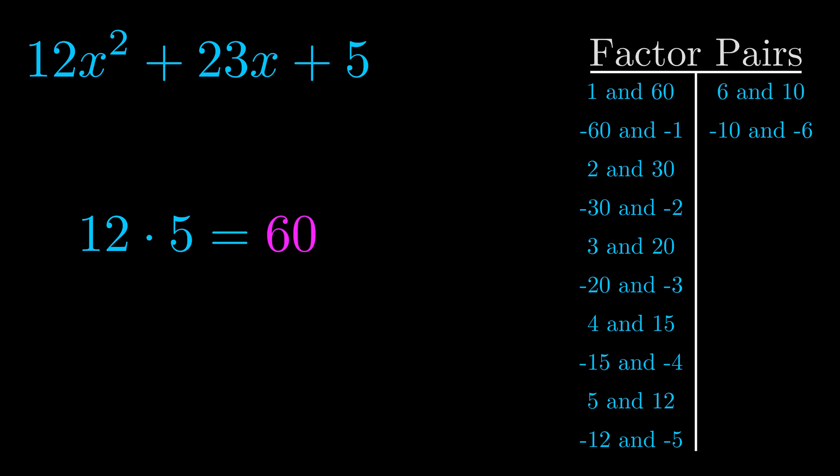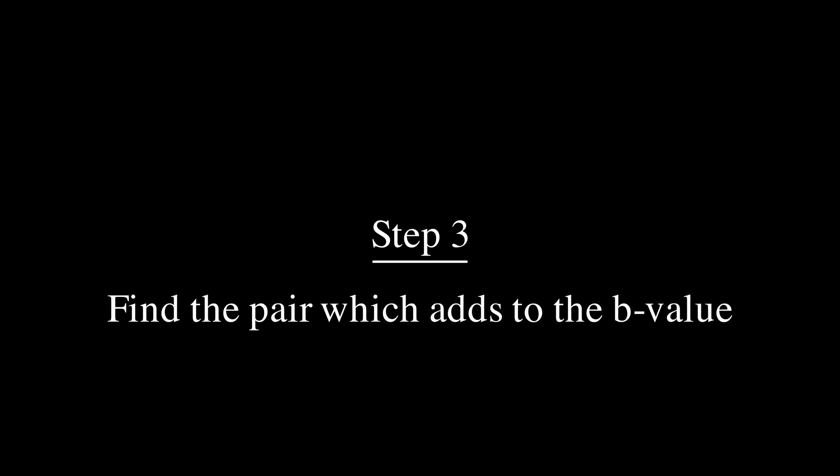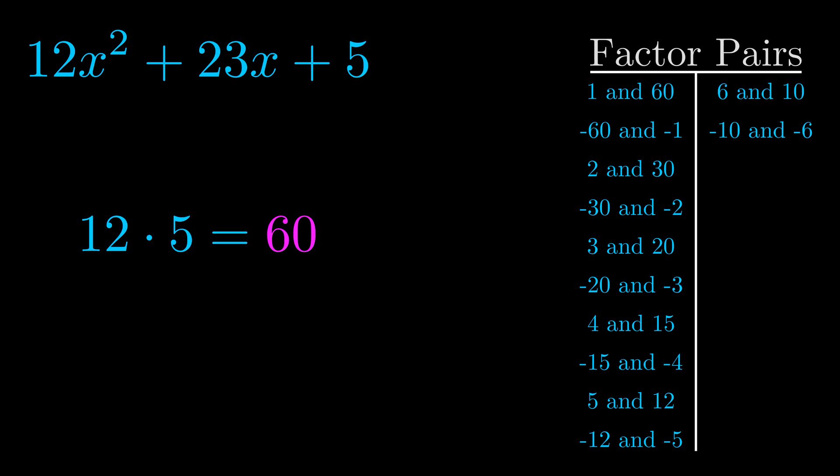Now once you have these factor pairs, the goal is to find which of these pairs adds to the b value. The b value is the coefficient on the x term. That's the middle term, the one that we haven't done anything with yet.